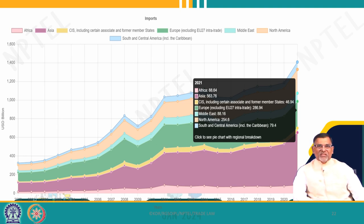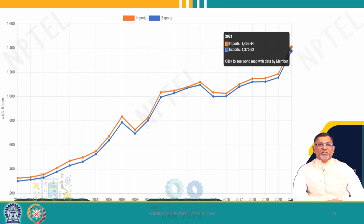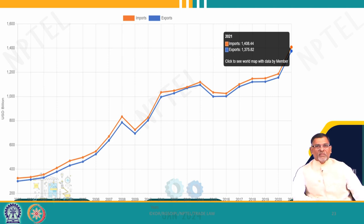Looking at the graph of exports and imports over the last two decades, exports are going up, and imports are also going up equally. Whenever there is a dip in imports, exports also go down. This means it is highly balanced — imports and exports are highly balanced. You cannot find a wide difference in world exports.